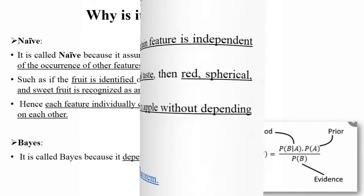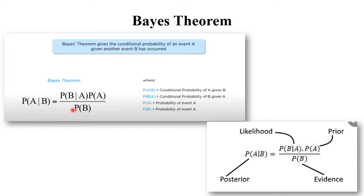Here is the Bayes theorem formula, which we use for solving examples using the Naive Bayes classifier algorithm. Let's review: P(A|B) is the posterior probability — given condition B has already occurred, you need to find A. P(B|A) is the likelihood probability — given event A has occurred, you find the probability of B. P(A) is the prior probability and P(B) is the evidence. These two events A and B occur, and this relationship is Bayes theorem.